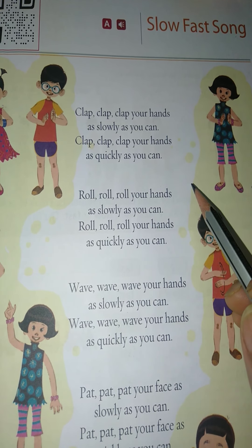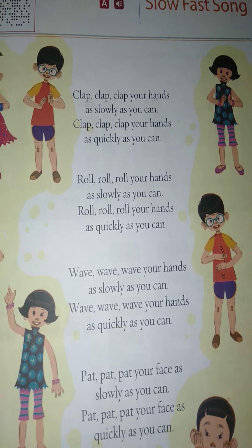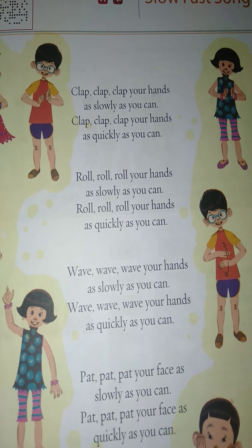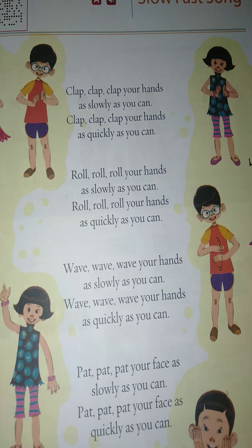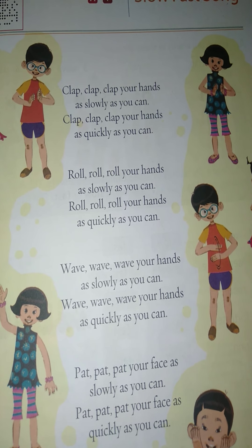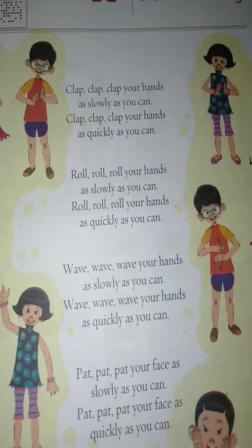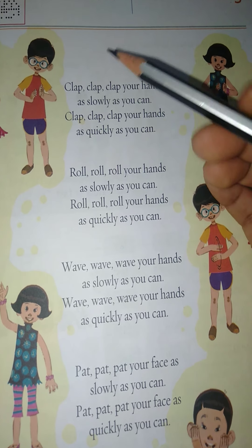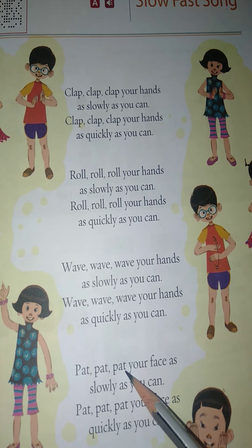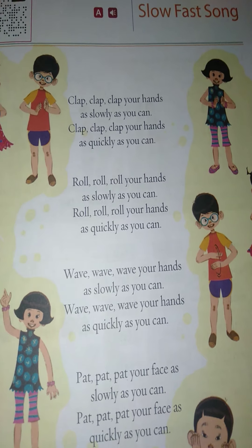Look at the picture. Here are pictures of different children. This is an action poem giving directions to clap and roll, wave and pat slowly and then quickly. This is a poem about different types of actions — clap, roll, wave, and pat. First it is done slowly, then quickly.